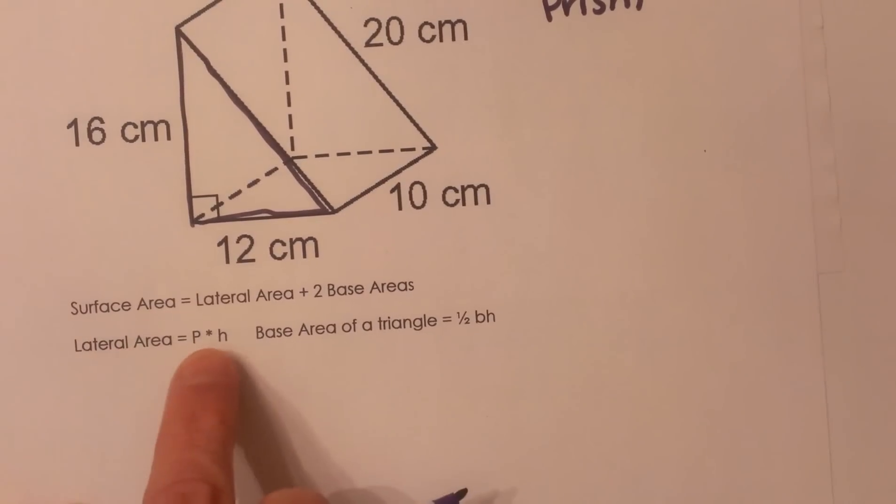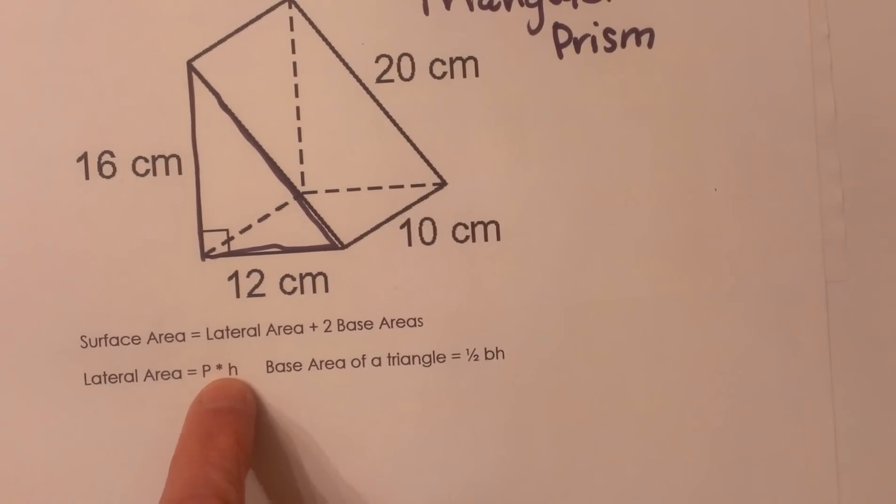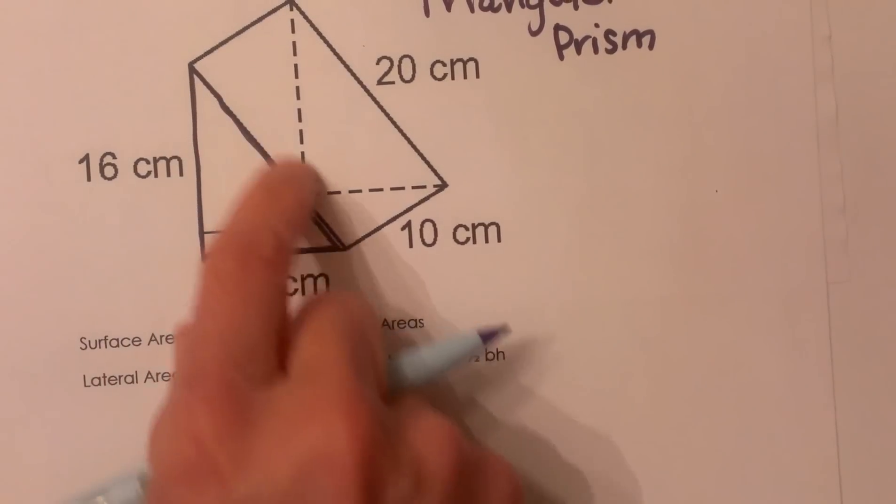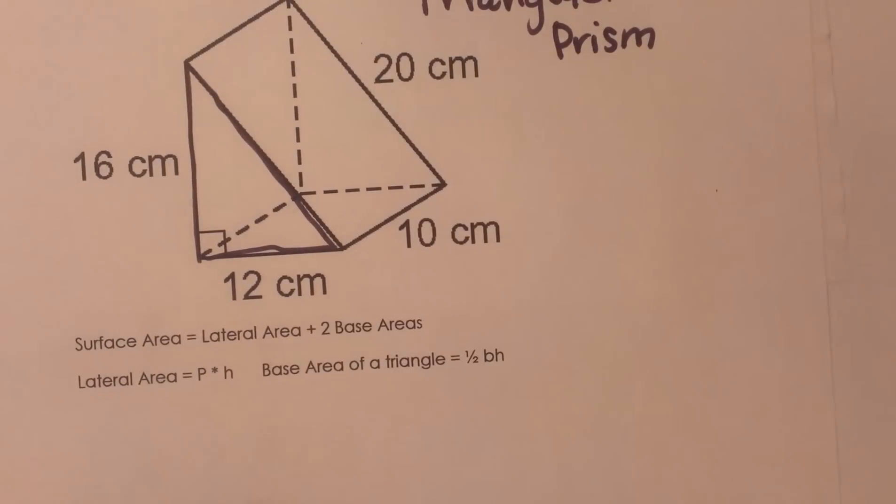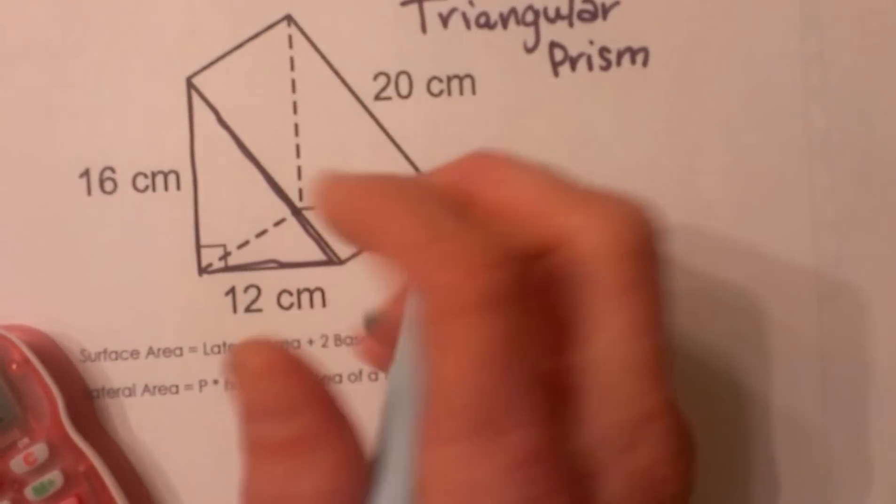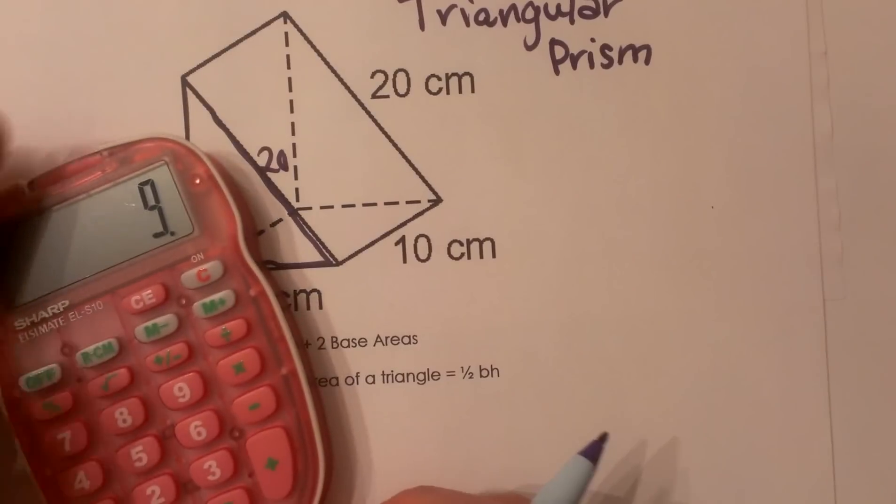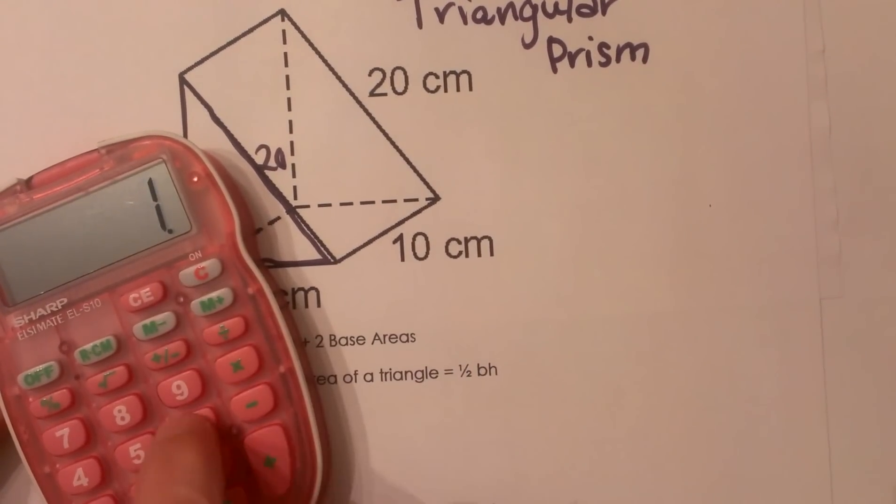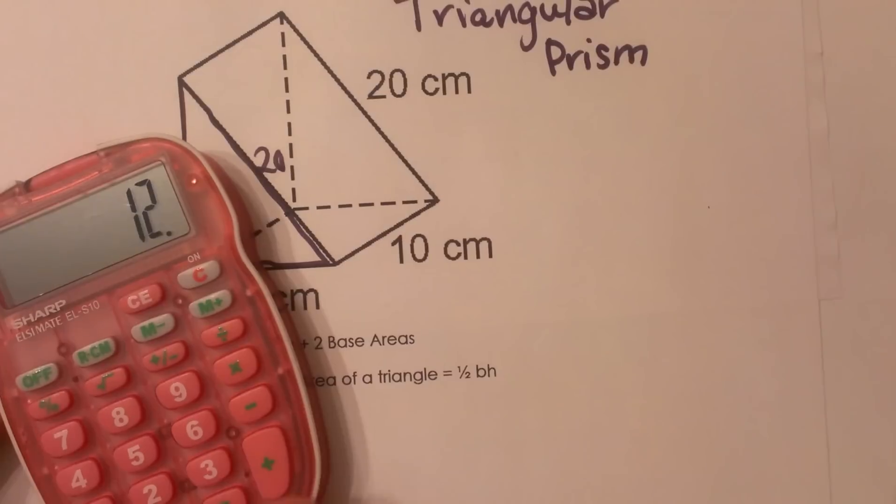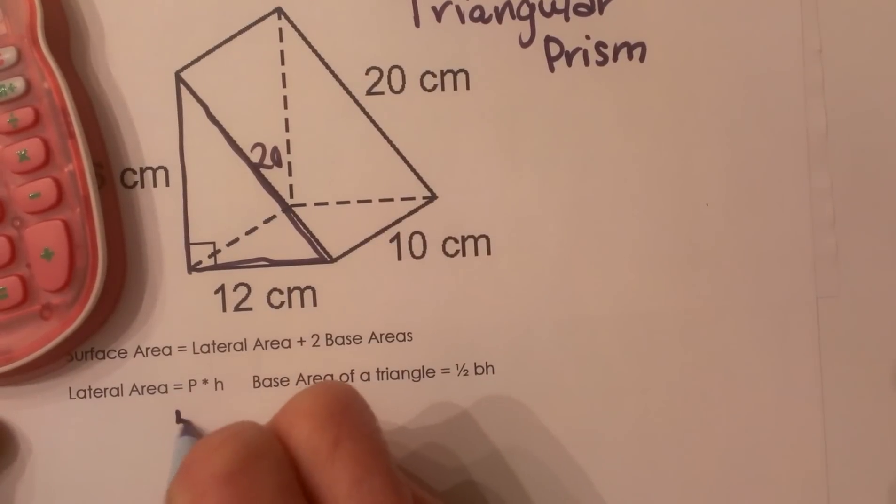To find the lateral area, I need p times h, and p in this case is the perimeter of the base. So let's go to the base and look at the perimeter. The perimeter, I'm going to take 16 plus 12 plus this side is 20, so this side must be 20. That means I'm going to add those three sides for the perimeter. So 16 plus 12 plus 20, that's going to give me 48. So my perimeter is 48.